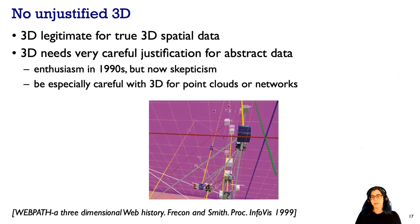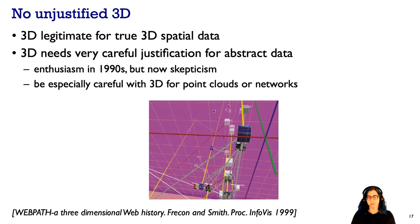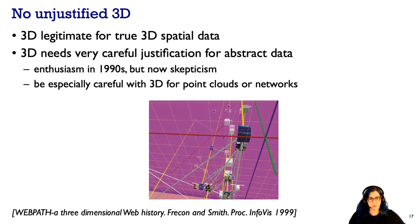3D is legitimate for true 3D data. Be very careful if your data is abstract, tabular, or network data. There was a lot of enthusiasm for 3D in the 90s, but after many empirical studies uncovered difficulties, there's now much more skepticism. Be particularly careful with points in three-dimensional space — beware 3D scatter plots — and with network data where links connect points, as it can be quite hard to resolve 3D depth relationships.